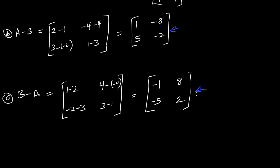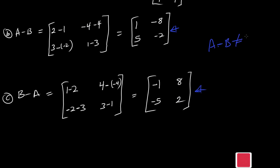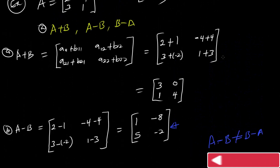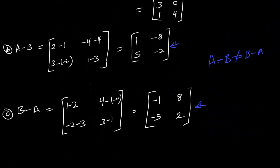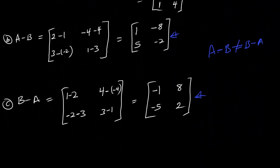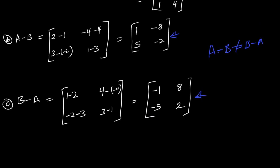So you can see that the subtraction of two matrices is not commutative — A minus B is not equal to B minus A. You can also check for yourself whether A plus B equals B plus A. Take note that A minus B is not equal to B minus A. That's simply how we perform addition and subtraction of matrices. In the next tutorial, we move into multiplication — looking at how we can multiply matrices by a scalar and how we can multiply matrices by matrices. Thank you, and I'll see you in the next tutorial.